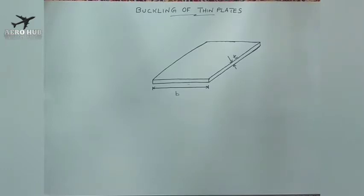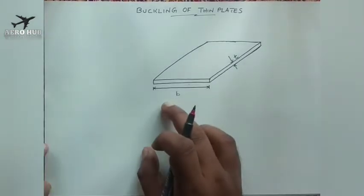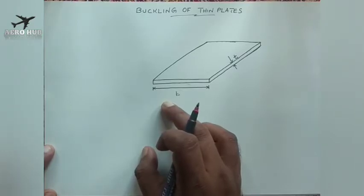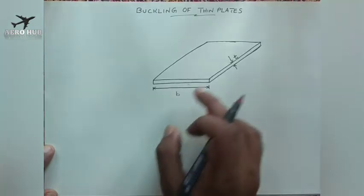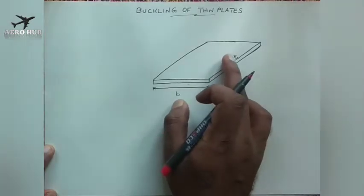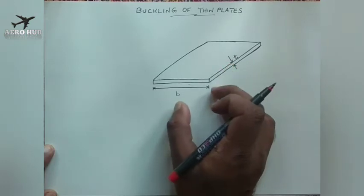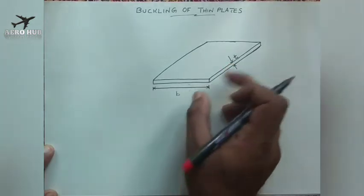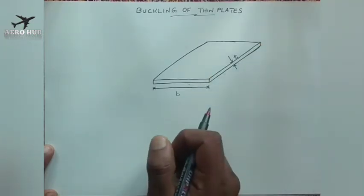We will discuss what is meant by plate and we will discuss the application of plates in airframe structures. As you can see in the figure, we have a plate structure here. A plate is nothing but a structure having thickness very small when comparing to the other two dimensions. You can see in the figure the thickness is small letter T, and the thickness is very small when comparing to the lateral dimension B as well as the larger dimensions.